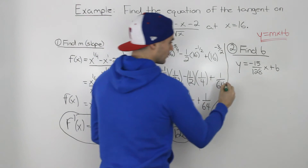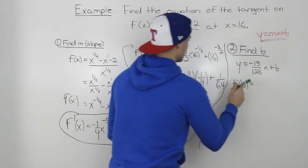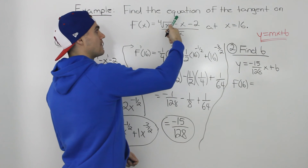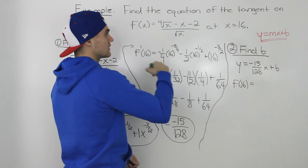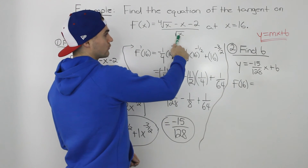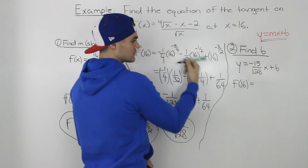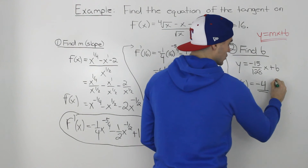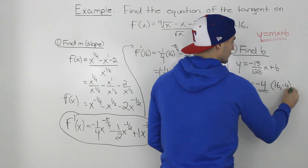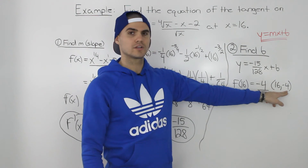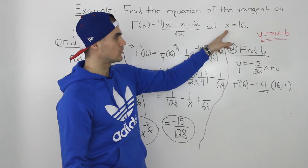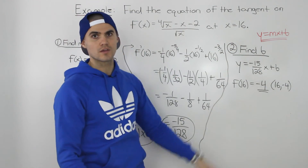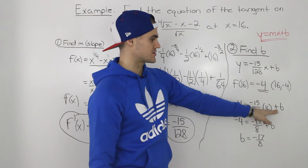Finding f of 16: the fourth root of 16 is 2, then 2 minus 16 is negative 14, and negative 14 minus 2 is negative 16, all over the square root of 16 which is 4. So negative 16 divided by 4 equals negative 4. The coordinate is (16, negative 4). Sometimes a question gives you the full coordinate; here it only gave the x value, so we had to find the y value ourselves.